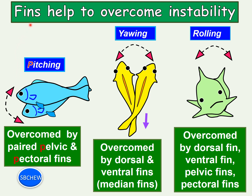Fish use fins to overcome instability in water. There are three types of instability: pitching (up and down movement), yawing (left and right movement instead of going straight ahead), and rolling (turning on an axis). Pitching and yawing are the movements that cause the fish to be displaced from its path — to overcome pitching, the fish uses the pelvic and pectoral fins, both starting with P.